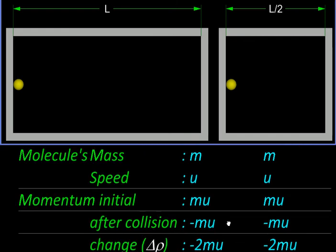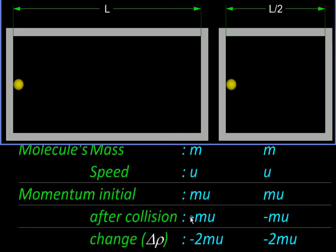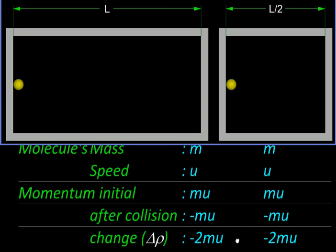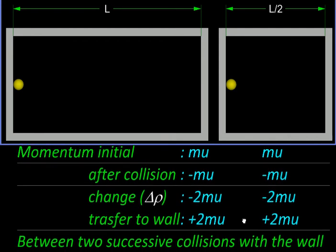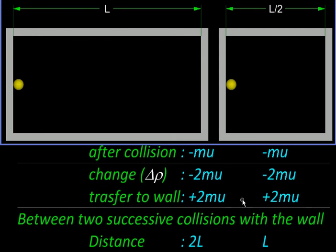Then it collides with the wall and it bounces back with the same speed, so its momentum will become minus MU. And the change in its momentum will be final minus MU minus initial MU, will be minus 2MU. An equal but opposite momentum will be transferred to the wall, so this is the momentum transferred to the wall, plus 2MU.